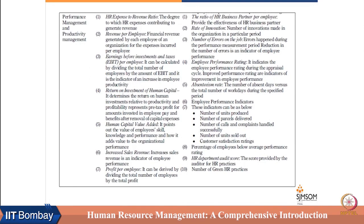There is another set of data about performance management or productivity management — how the performance of employees shows up in organizational data. Employee performance indicators include number of units produced, number of parcels delivered if it is a delivery or courier company, or number of calls per day if the organization is a call center. These performance and productivity management data points are collected accordingly.